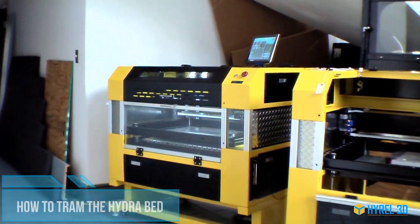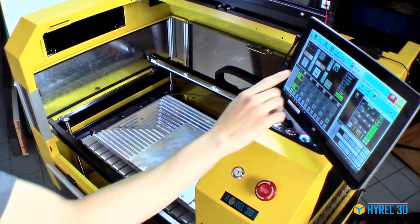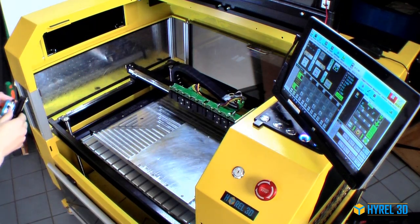How to Tram the Hydra Bed. Step 1: Inserting a Travel Gauge. In Repetrel, go to the Control tab and press Home, and then press Park.